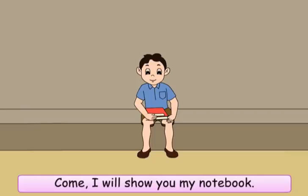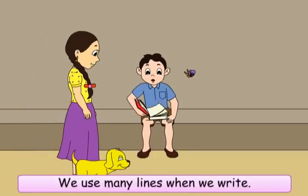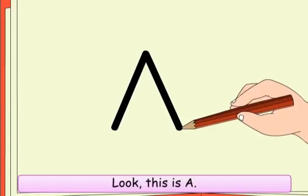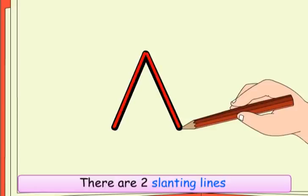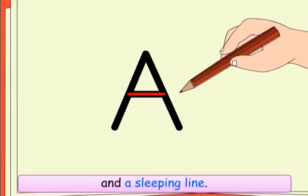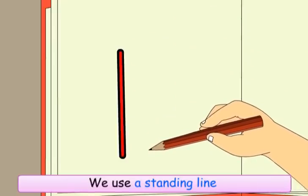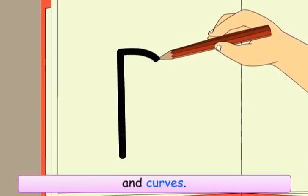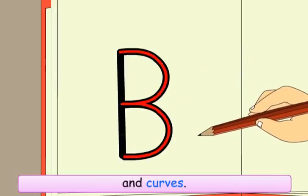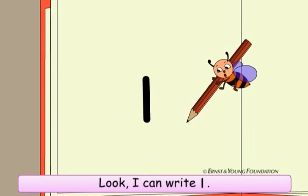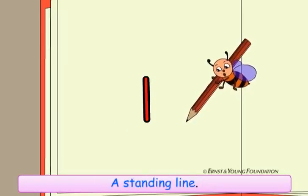Meenu says: 'Come, I will show you my notebook. We use many lines when we write.' She shows the letter A: 'There are two slanting lines and a sleeping line.' Then shows B: 'We use a standing line and curves.' Buzz exclaims: 'This is fun! I can write one — a standing line.'